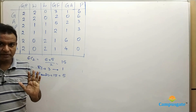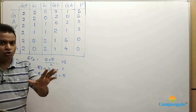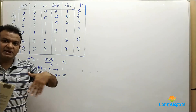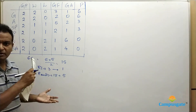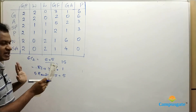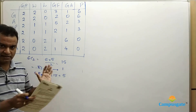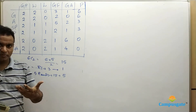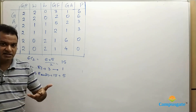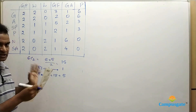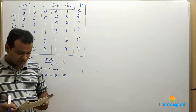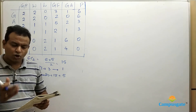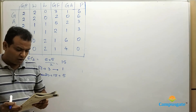Once 2 rounds are completed, each team has played 2 matches. This is a very important logic for any question like this: first check the total number of matches, then figure out how many rounds will be conducted. Keep this framework in mind throughout the problem.